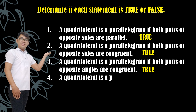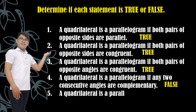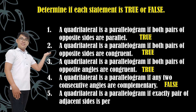Number four: a quadrilateral is a parallelogram if any two consecutive angles are complementary. The answer is false. And the last one: a quadrilateral is a parallelogram if exactly one pair of adjacent sides is perpendicular. That is also false.